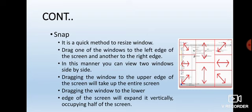Through these arrow points you can drag your window. Drag one of the windows to the left edge of the screen and another to the right edge of the screen. In this manner you can view two windows side by side. If you want to see two windows at one time, you can minimize both windows so that both windows fit into your screen.